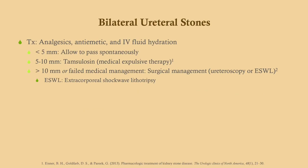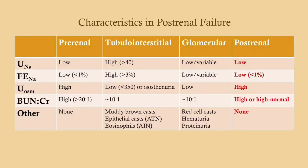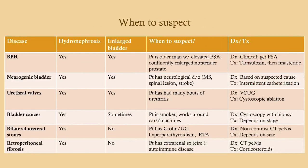Treat nephrolithiasis with analgesics — start with indomethacin, though many patients will need morphine. Use anti-emetics if vomiting and maintain hydration with fluids to flush the kidneys. If the stone is under 5mm, wait for spontaneous passage. For 5–10mm, use tamsulosin (medical expulsive therapy), which is very effective. Over 10mm or failed medical management requires ureteroscopy or extracorporeal shockwave lithotripsy. Finally, here are the characteristics of post-renal failure and a summary table of all conditions discussed.